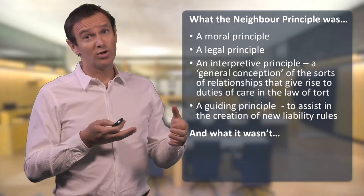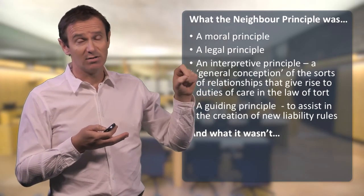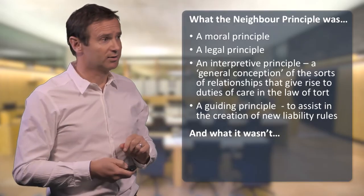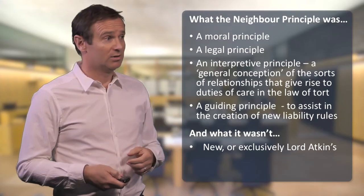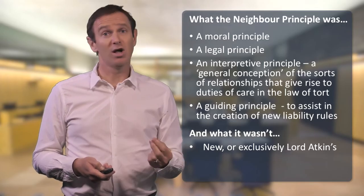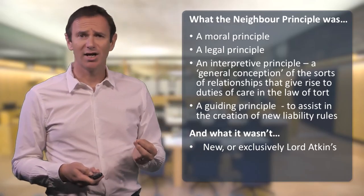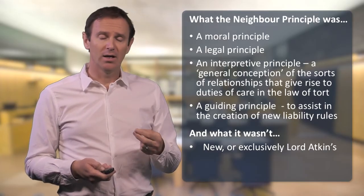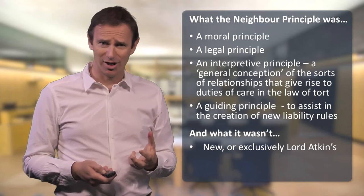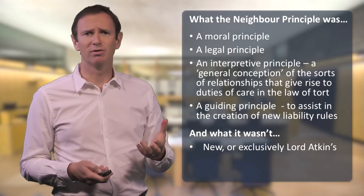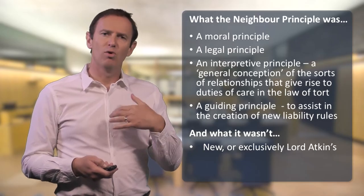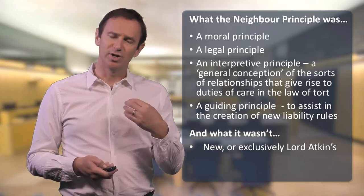Think back to the previous primordial state of the law — that series of mere particularities. How is a judge to extract anything from that? How are they to decide a new case? The neighbour principle is supposed to assist them in that task. Equally importantly, what wasn't the neighbour principle? Interestingly, it wasn't exclusive to Lord Atkin or necessarily particularly new in the law. Lord Atkin himself draws very explicitly on the judgment of Master of the Rolls Brett in a case called Heaven and Pender in the 1880s. As long ago as the 1770s, a legal writer known as Francis Buller had suggested that there was a principle in the law that one should take reasonable care to avoid injuring one's neighbour. So the idea of neighbourhood itself wasn't new, but Lord Atkin was attempting to revive or utilise or make practical this idea of neighbourhood as a reasoning tool for judges.